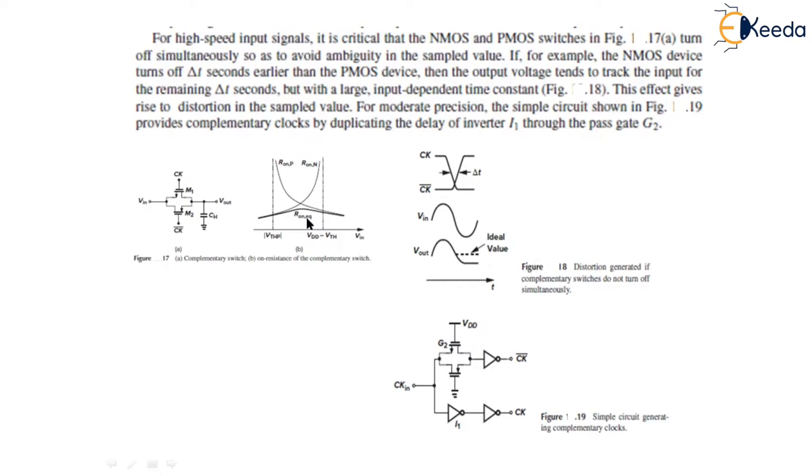For high-speed input signals, it is critical that the NMOS and PMOS switches as shown in figure 17 turn off simultaneously so as to avoid ambiguity in the sampled value.